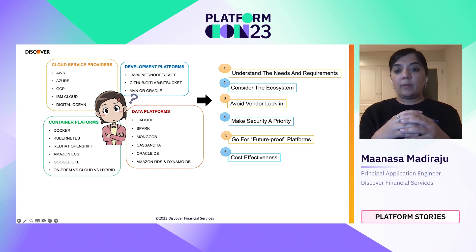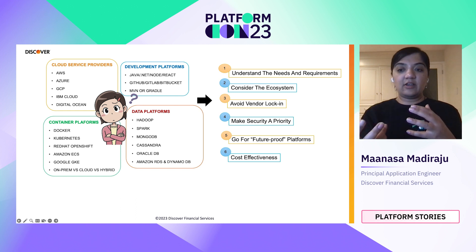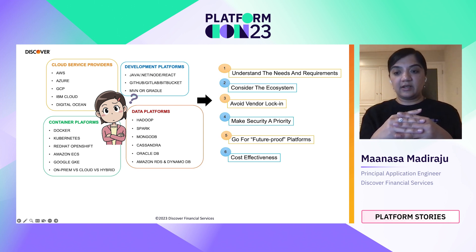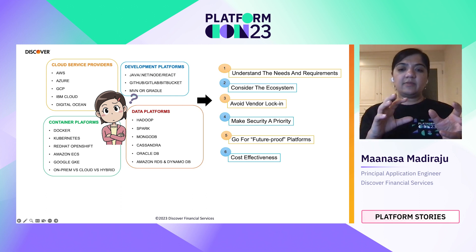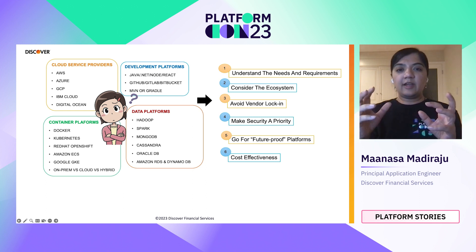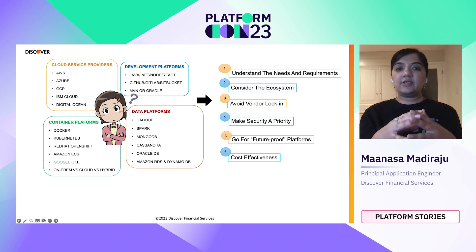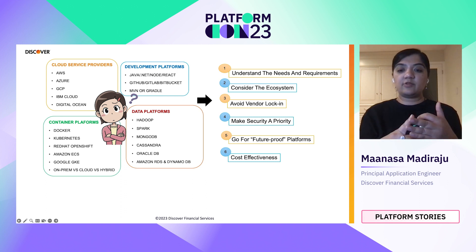When it comes to platform choices, I've drilled it down to six key things: first, understand the needs — scale, tech stack, budget, and team expertise. Consider the broader ecosystem of tools and services that surround your platform. Avoid vendor lock-in by choosing platforms that use open standards and offer easy migration paths. Ensure strong security measures are in place, such as encryption and regular security audits. Choose or build platforms that are future-proof and can adapt to changing technologies and market trends. When budgeting, don't fail to include licensing fees, infrastructure costs, support costs, and the potential for cost savings through automation and efficiency improvements.